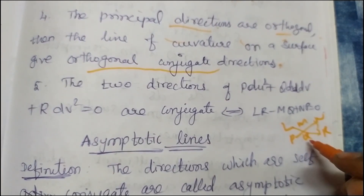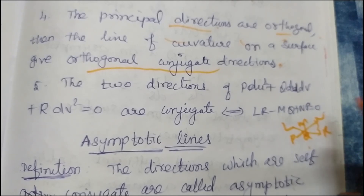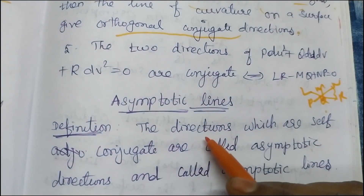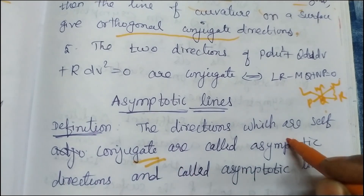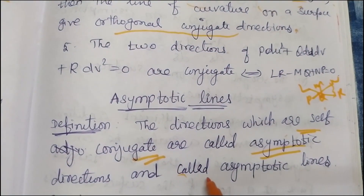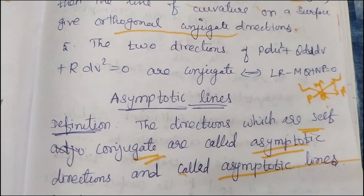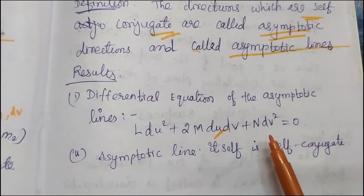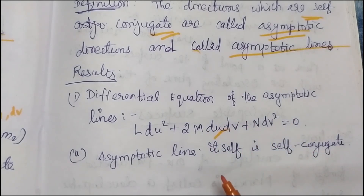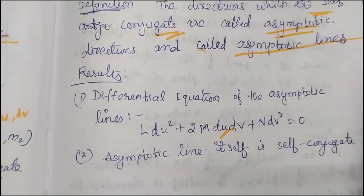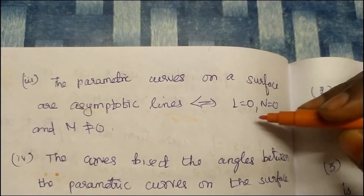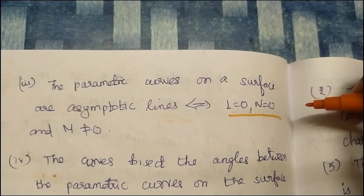Then l r minus m q plus n r equal to 0, where lmn and pqr are the two sets. Then l p minus 2q equal to 0 or conjugate. Here two directions — asymptotic line is one direction, conjugate with itself — self-conjugate — and is called asymptotic lines. Differential equation of asymptotic lines: l du squared plus 2m du dv plus n dv squared equal to 0. This is the equation of asymptotic lines, where the direction is self-conjugate. L equal to 0, n equal to 0, and m not equal to 0.